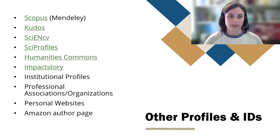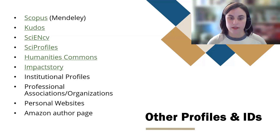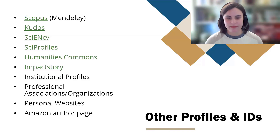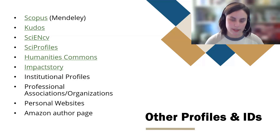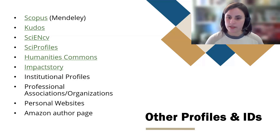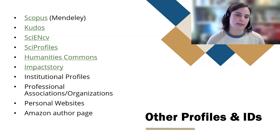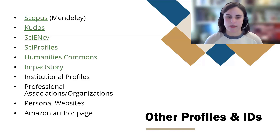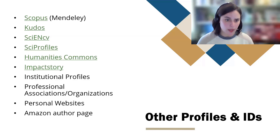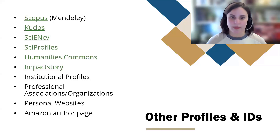You might also look at whether professional associations or organizations have profiles. For example, the American Library Association has a platform where they centralize a lot of networking and communication across committees. Whether it's used a lot or not, you might want to get a sense for what your association is using those profiles for and make sure the contact information is up to date. You could also have personal websites, or if you author books, an Amazon author page — are those things up to date and giving accurate information about how to contact you or what your other work is?